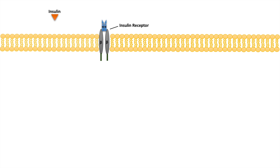This lesson is on the insulin signaling pathway and its regulation of the AKT pathway. To begin, insulin will bind to the insulin receptor on a cell that has an insulin receptor. There is an autophosphorylation mechanism that takes place when insulin binds to the insulin receptor. Once the insulin receptor autophosphorylates, it will phosphorylate insulin receptor substrate one and two, or IRS one and two.